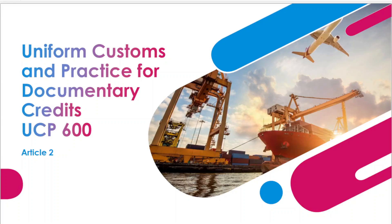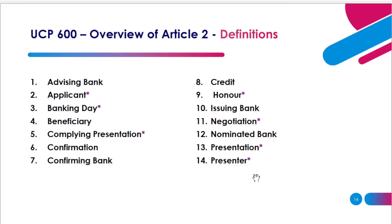Hi, everyone. Today we are going to discuss Article 2 of UCP 600, which is about definitions for certain terms. To be precise, we are going to talk about 14 terms. When you understand the meaning behind them, it will be easier to know where they plug in in the context of a letter of credit.